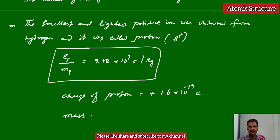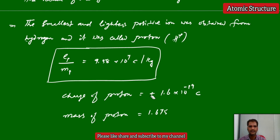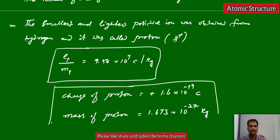From this they calculated the mass of proton. Once the charge of proton is known, mass of proton can be calculated. Substituting the value gives the mass of proton as approximately 1.673×10⁻²⁷ kg. These are the values for charge of proton and mass of proton.